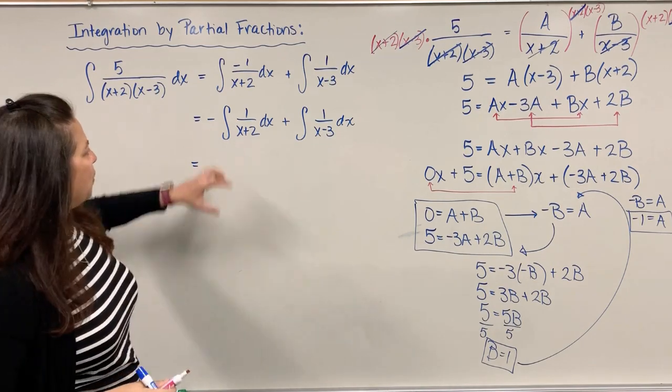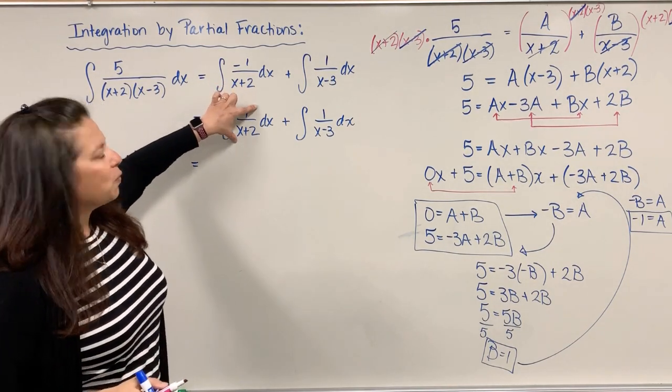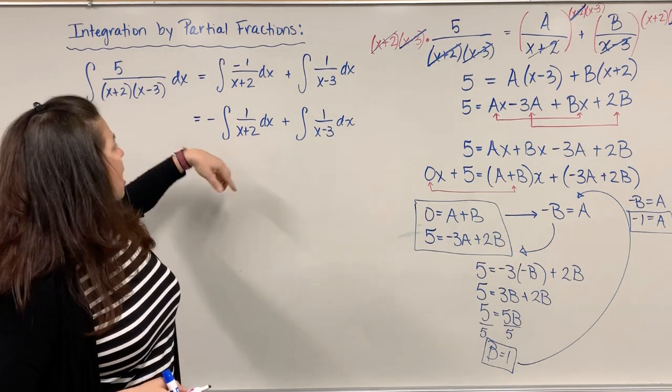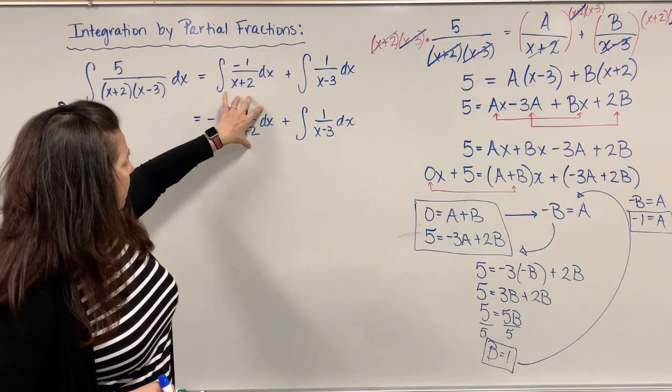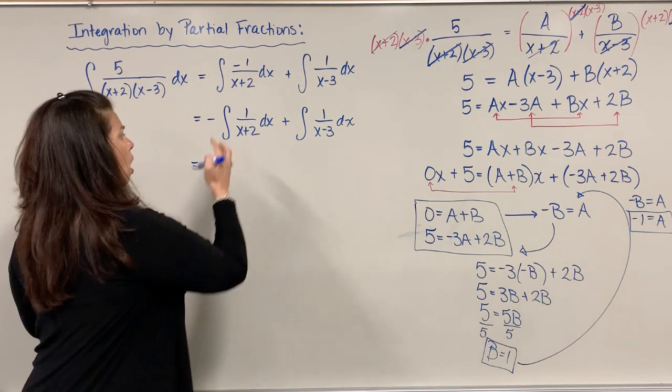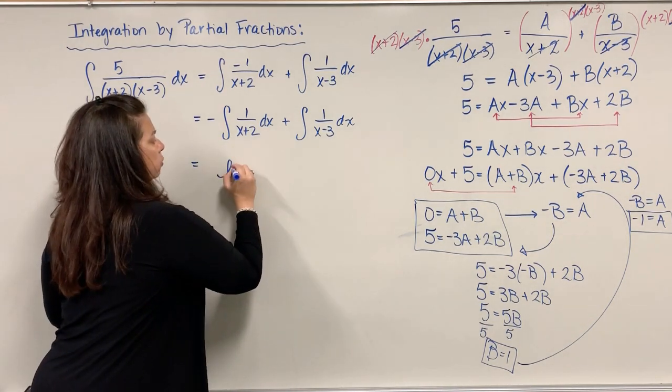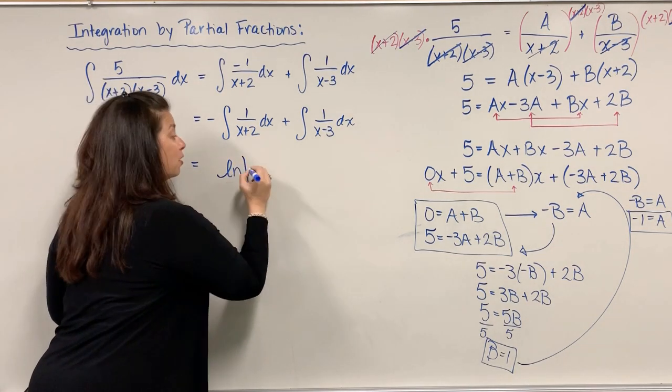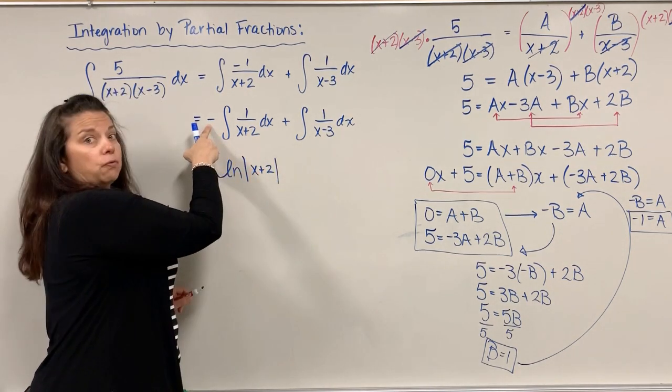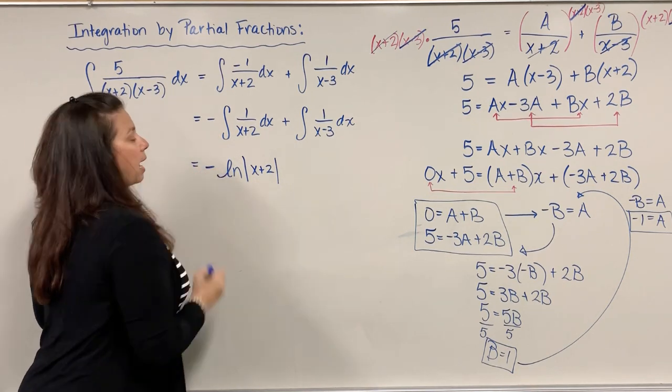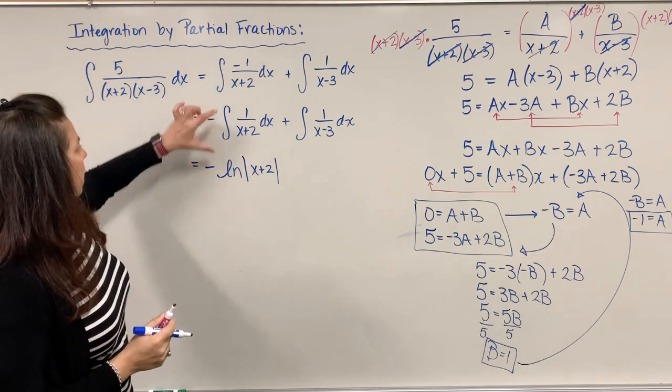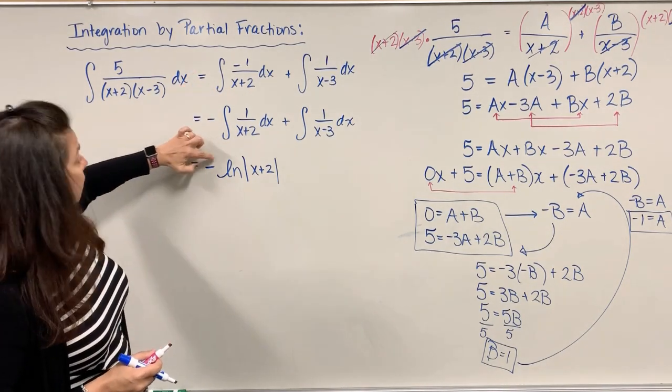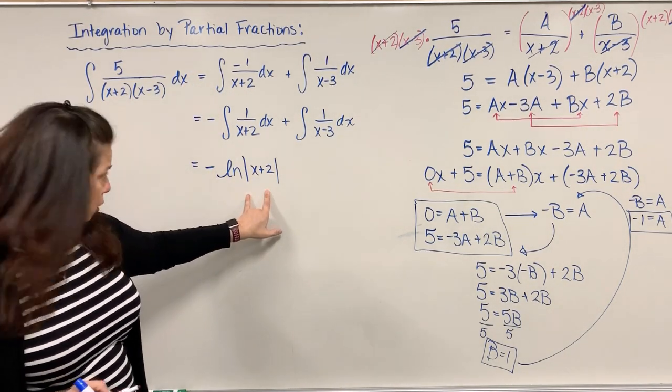Now we have to remember, when we have 1 over x+2, or 1 over any linear factor, and I'm trying to find the integral, it will always come back as a natural log of that denominator, natural log of the absolute value of x+2 in this case. Don't forget the negative that you had out front.